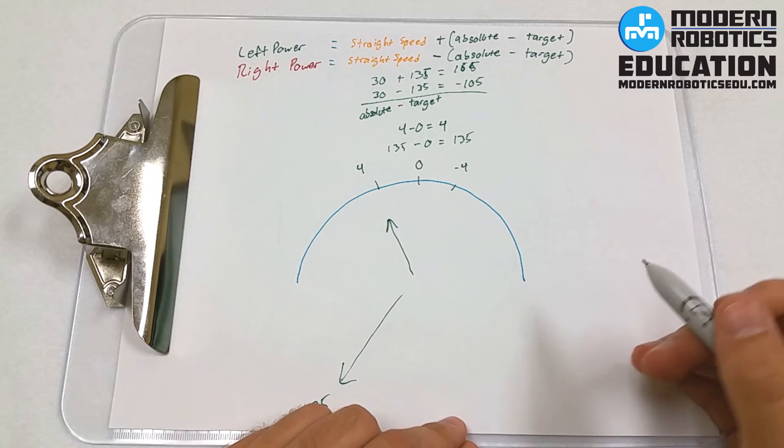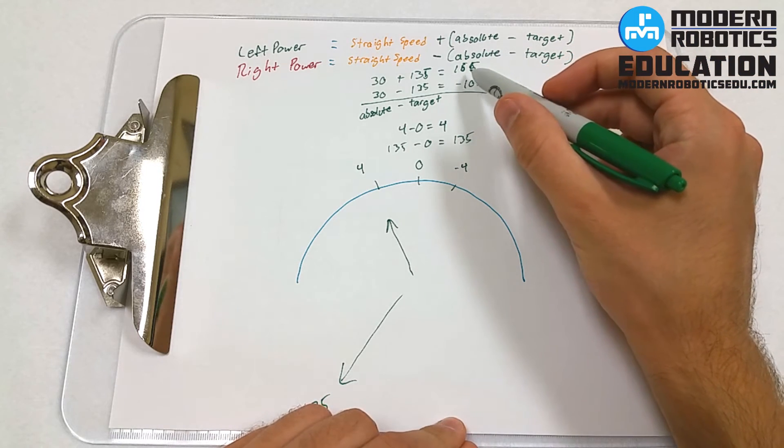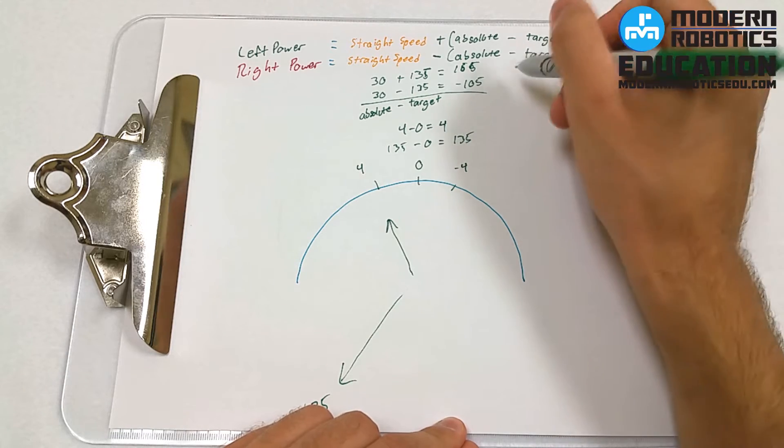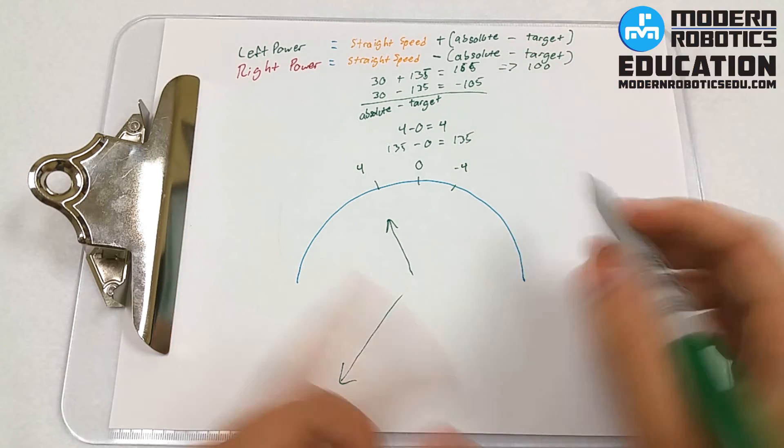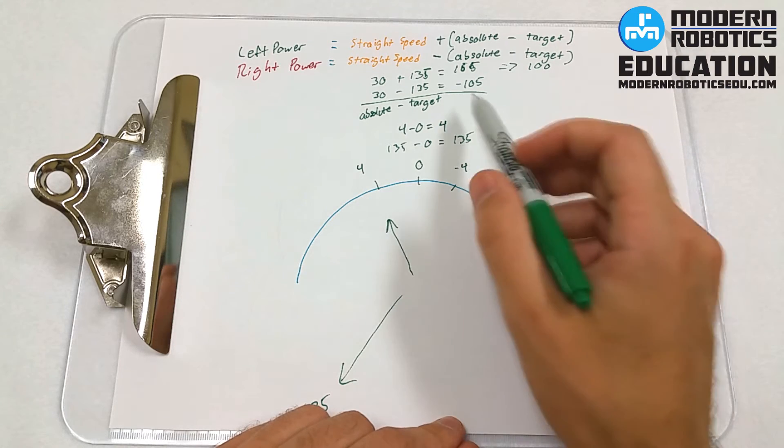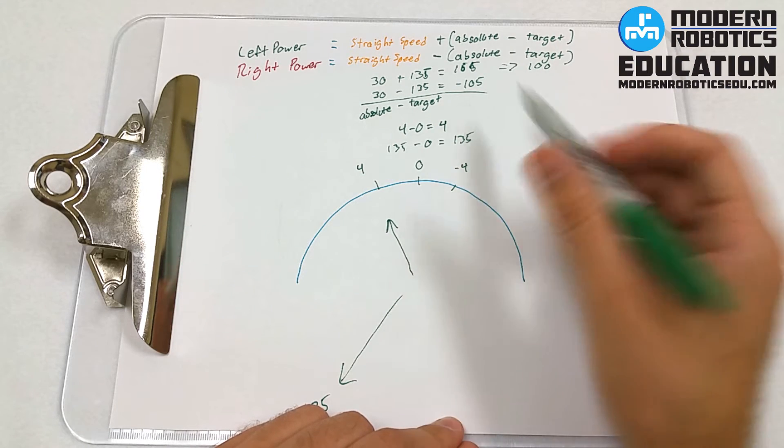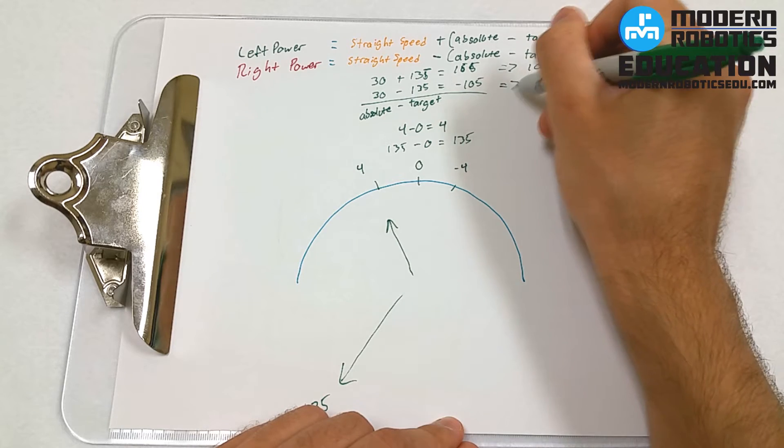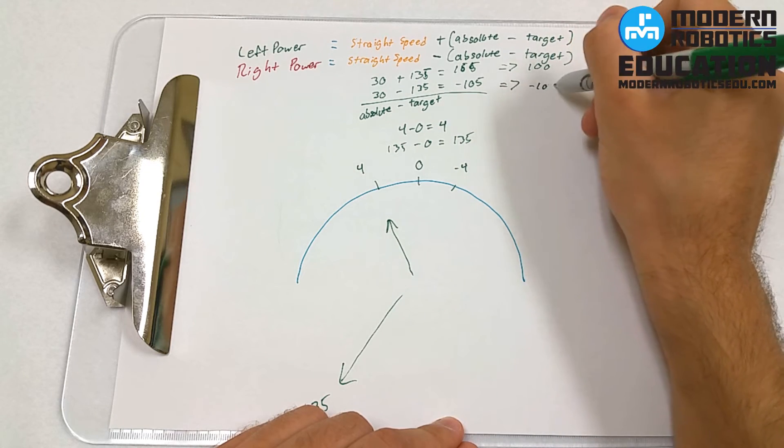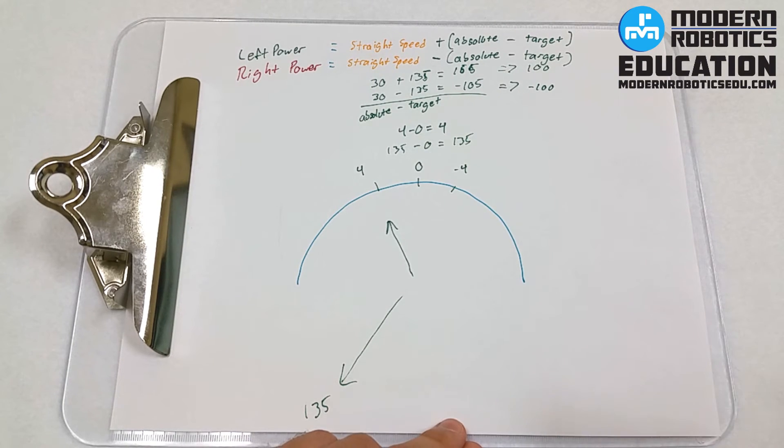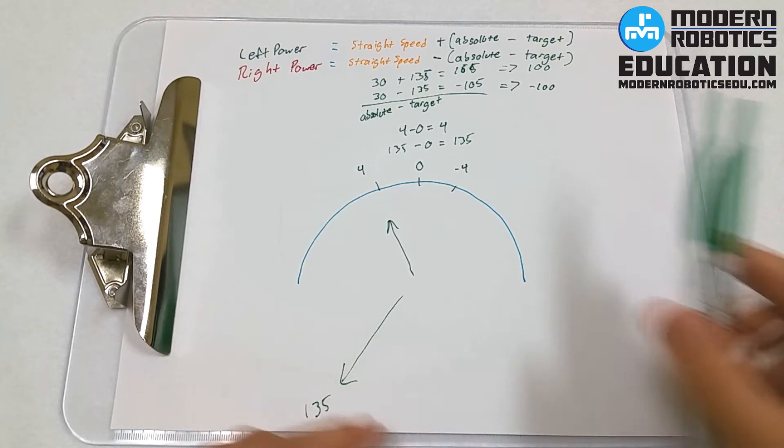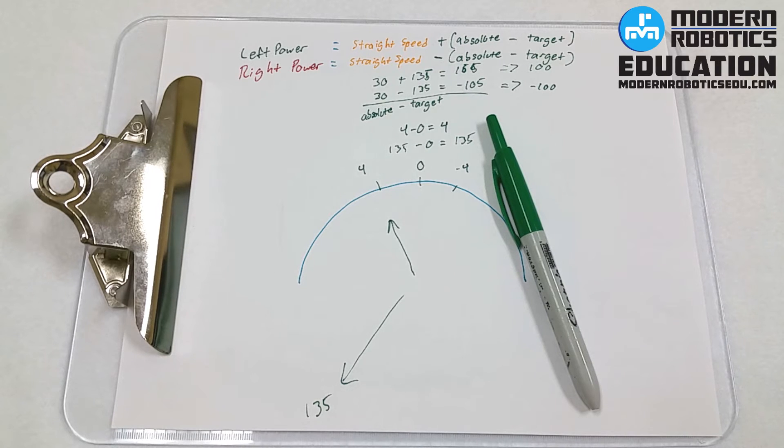So what we're going to do is we're going to clip it off. If our motor power is greater than 100, we're going to set it to be 100. If it's less than negative 100, we're going to change it to negative 100. That's it. That will make our robots drive straight, and if the robots get bumped around, they will go back to the direction you're facing initially, and then continue forwards.